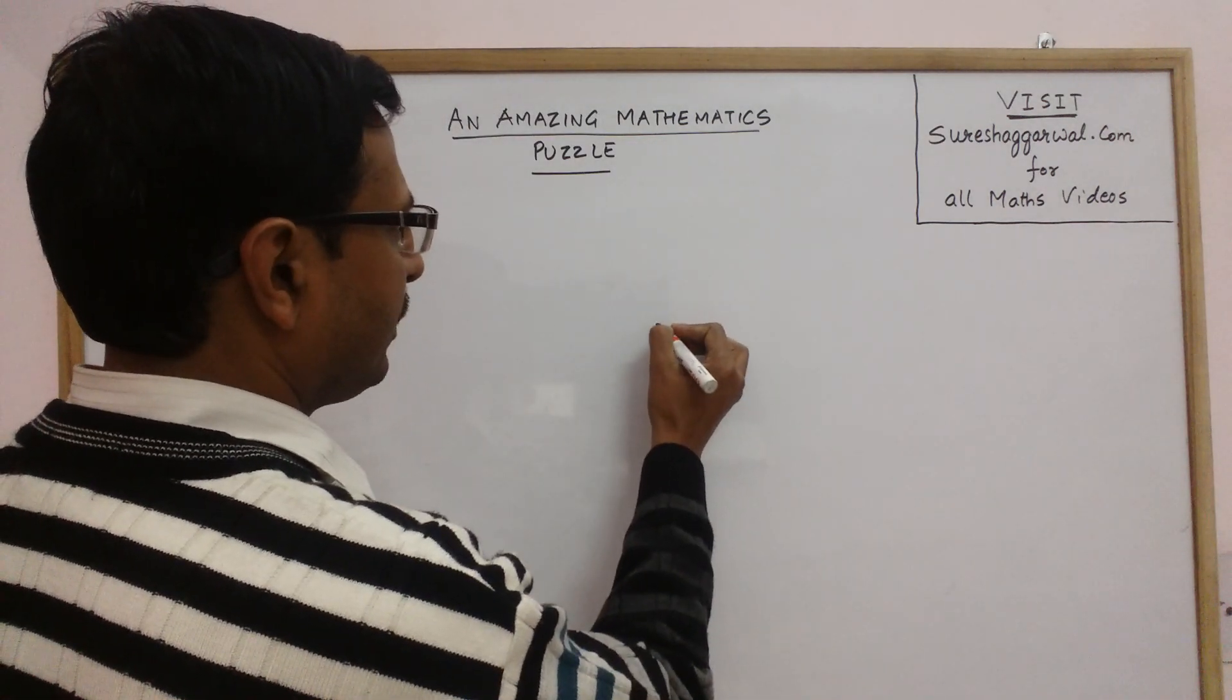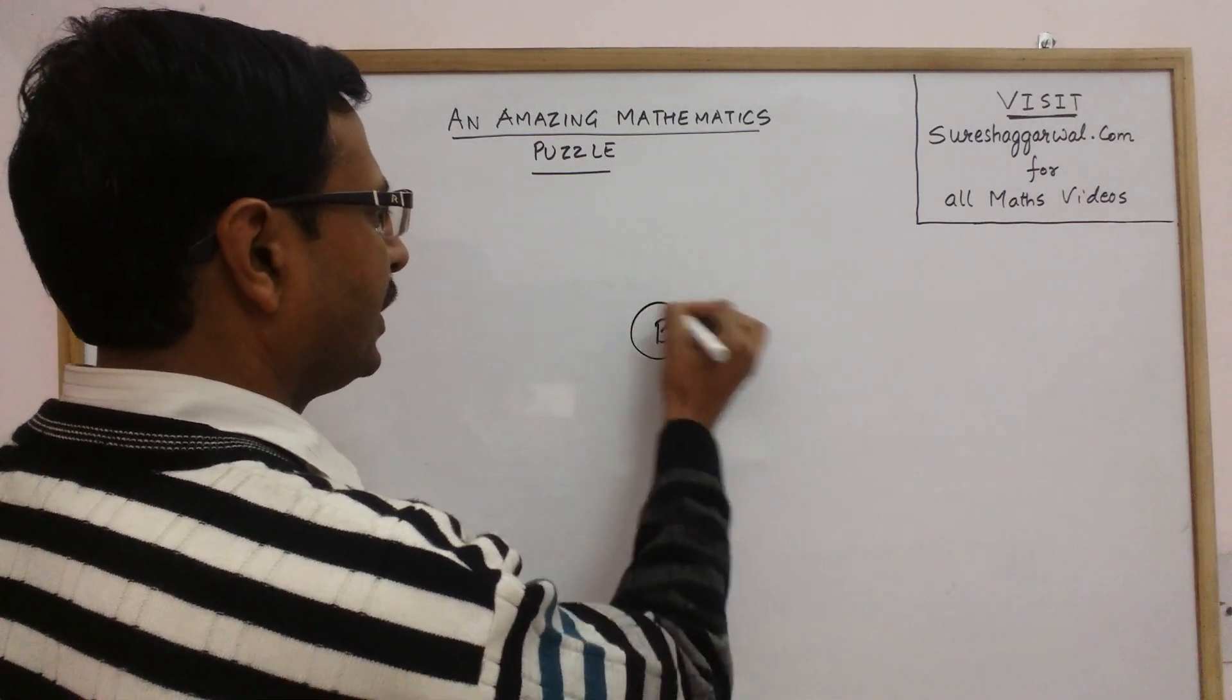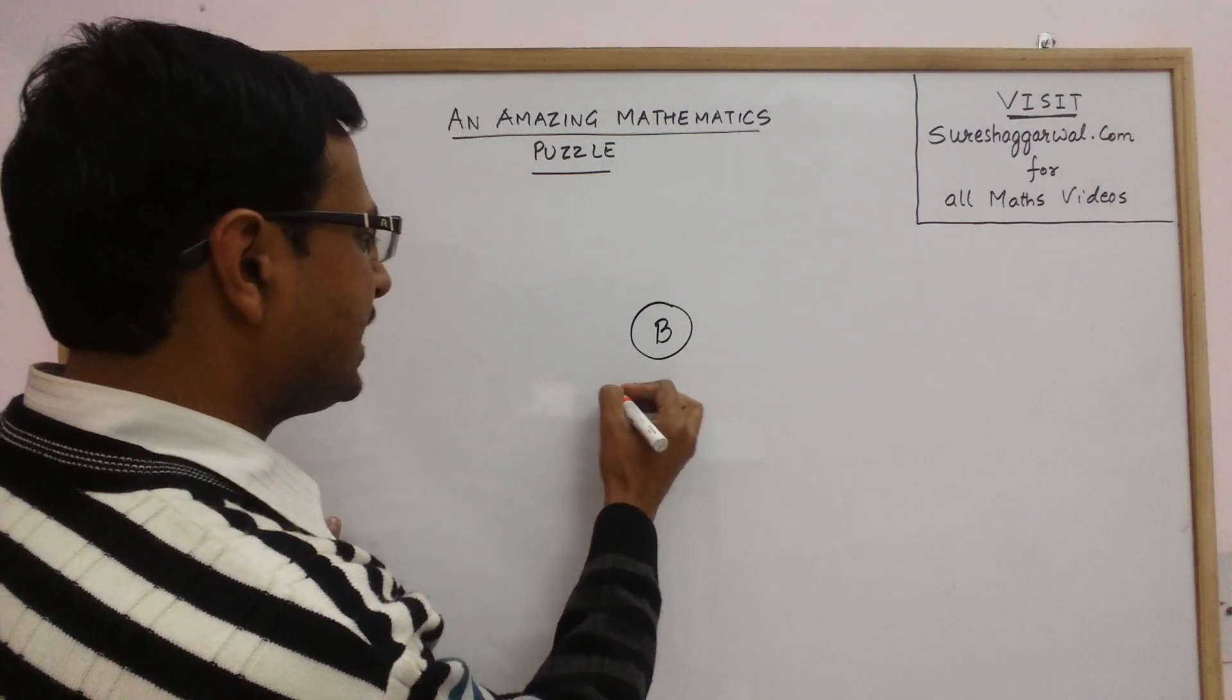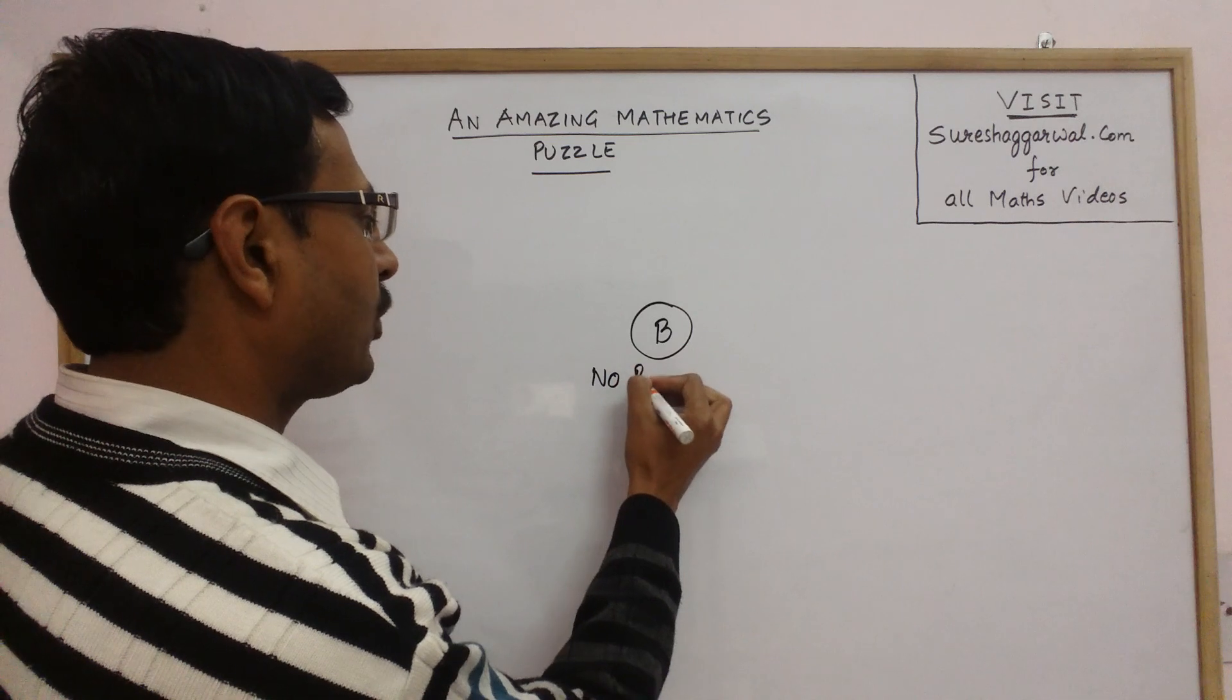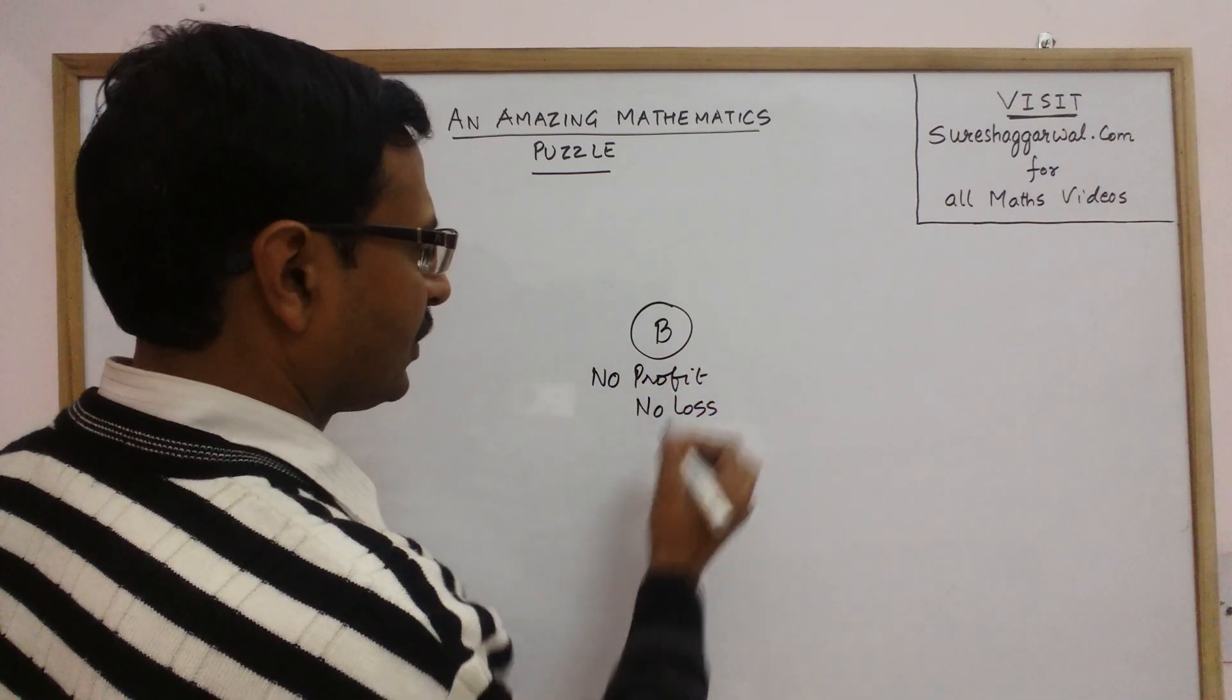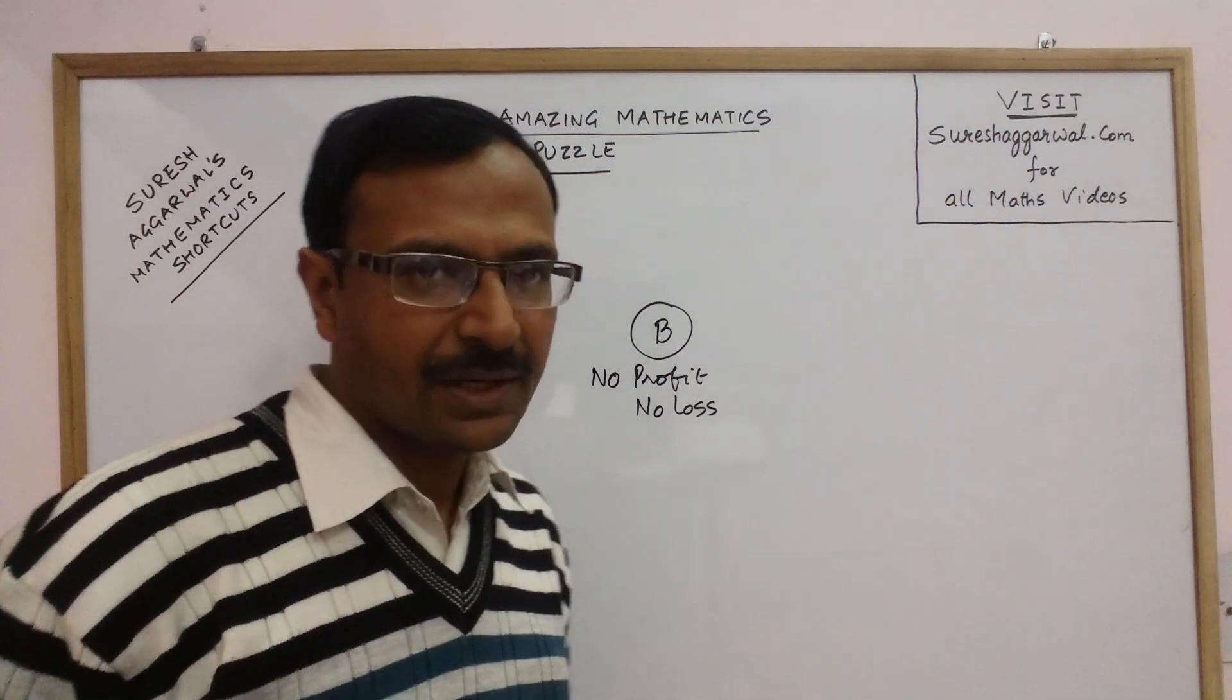This is person B. He is a shopkeeper and he sells items at no profit, no loss. So his cost price and selling price are the same.